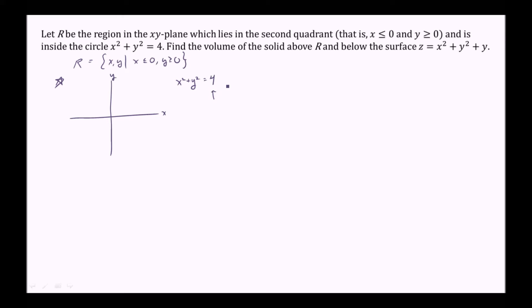x squared plus y squared equals radius squared, so r is equal to 2, the square root of 4. So we have a circle of radius 2, and the region r we're dealing with is in the second quadrant, so we have this quarter circle.